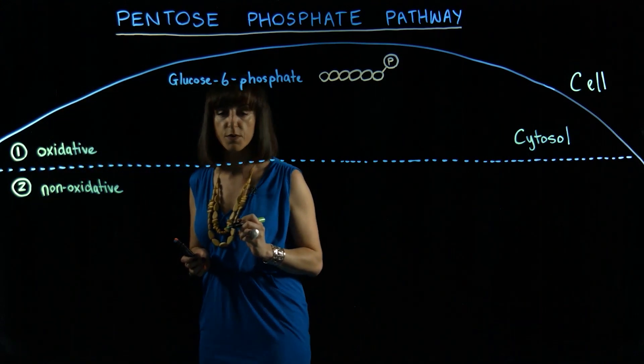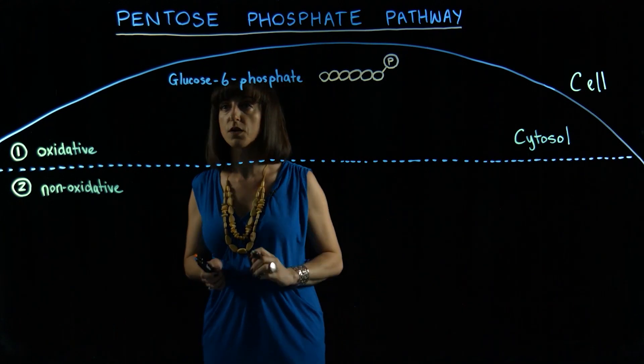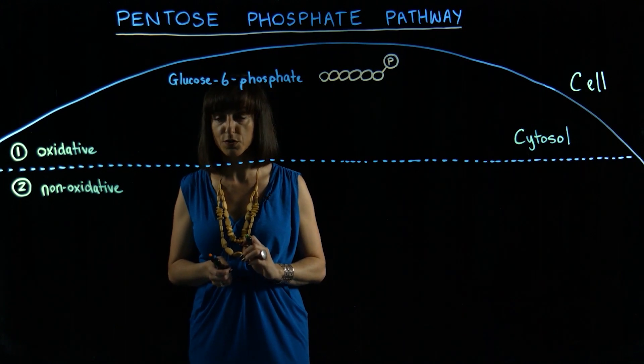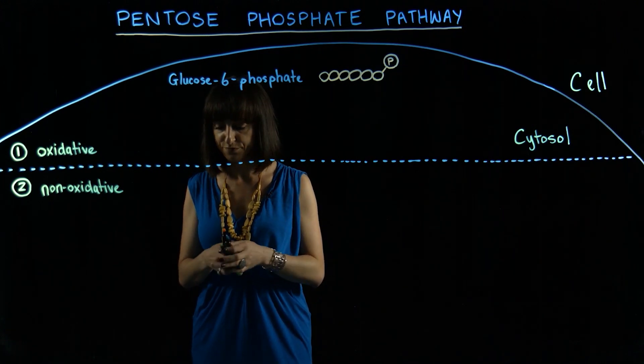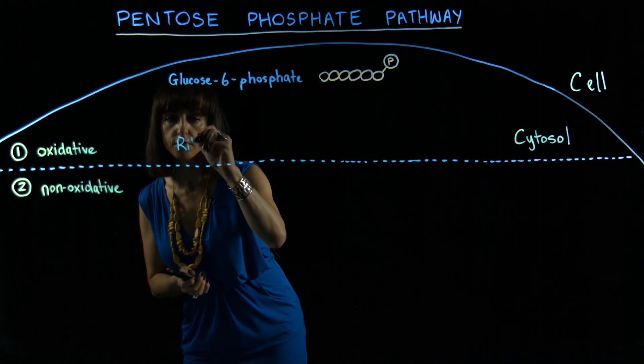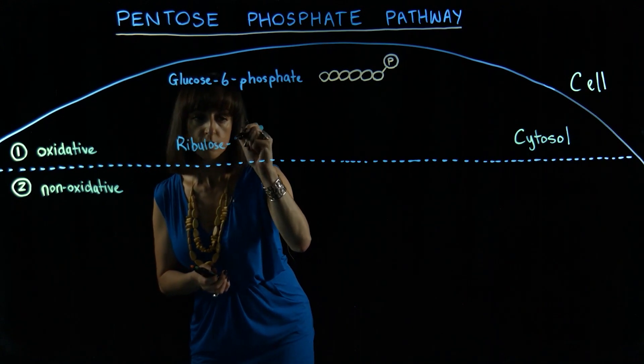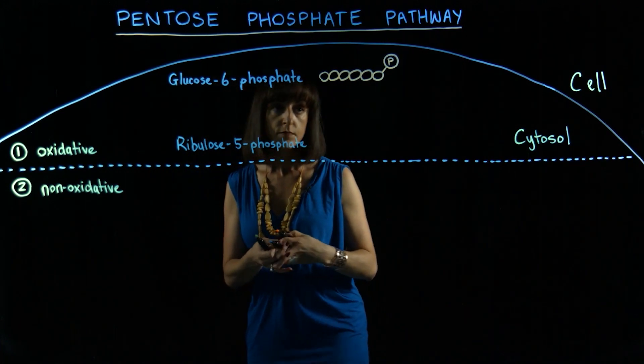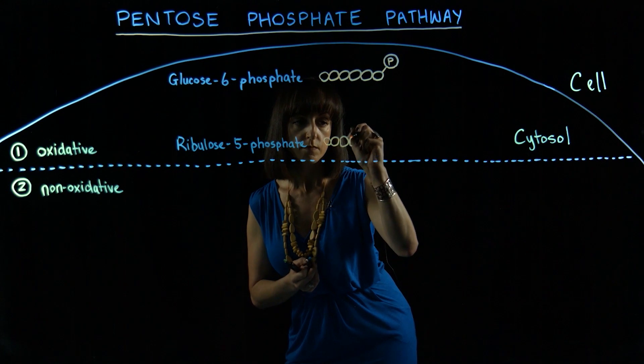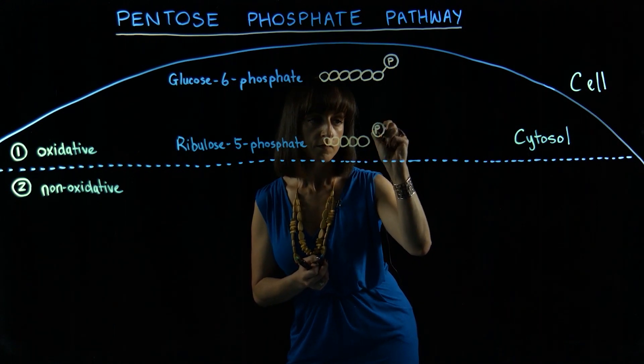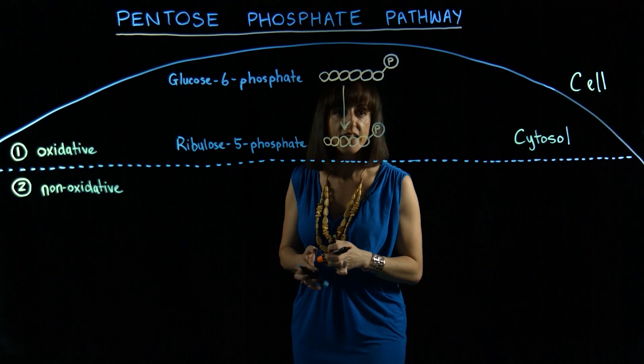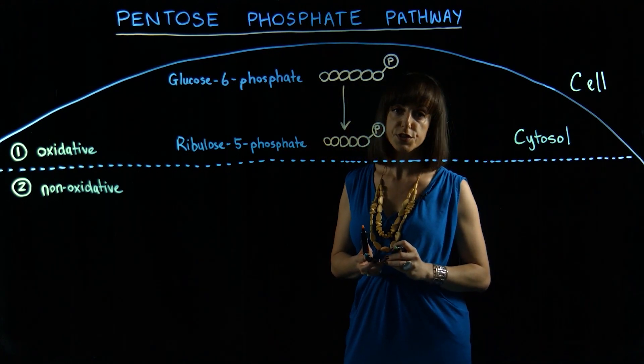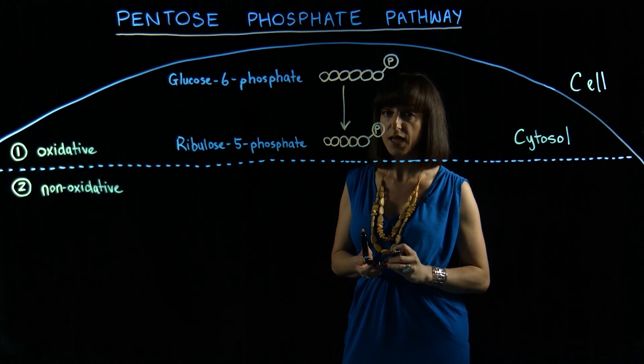In the very first step of the pentose phosphate pathway, our starting molecule, glucose 6 phosphate, is converted into a 5 carbon molecule called ribulose 5 phosphate. And it is in this very first step where we have two molecules of the reducing power called NADPH that are produced.